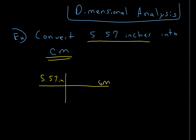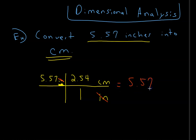Since the unit I'm currently in is inches, I need to think about how inches relate to centimeters. Inches goes on the bottom. There is one inch for every 2.54 centimeters. The reason inches goes on the bottom is that the inches in the numerator and the inches in the denominator will cancel when you multiply across.